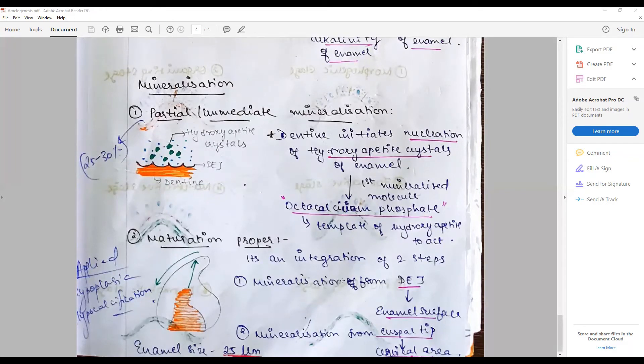Maturation is an integrated two-step process that starts from the DEJ and extends slowly to the enamel surface, and proceeds from cusp to the cervical area. Highly calcified enamel crystal size is about 25 micrometers in the form of long ribbons.